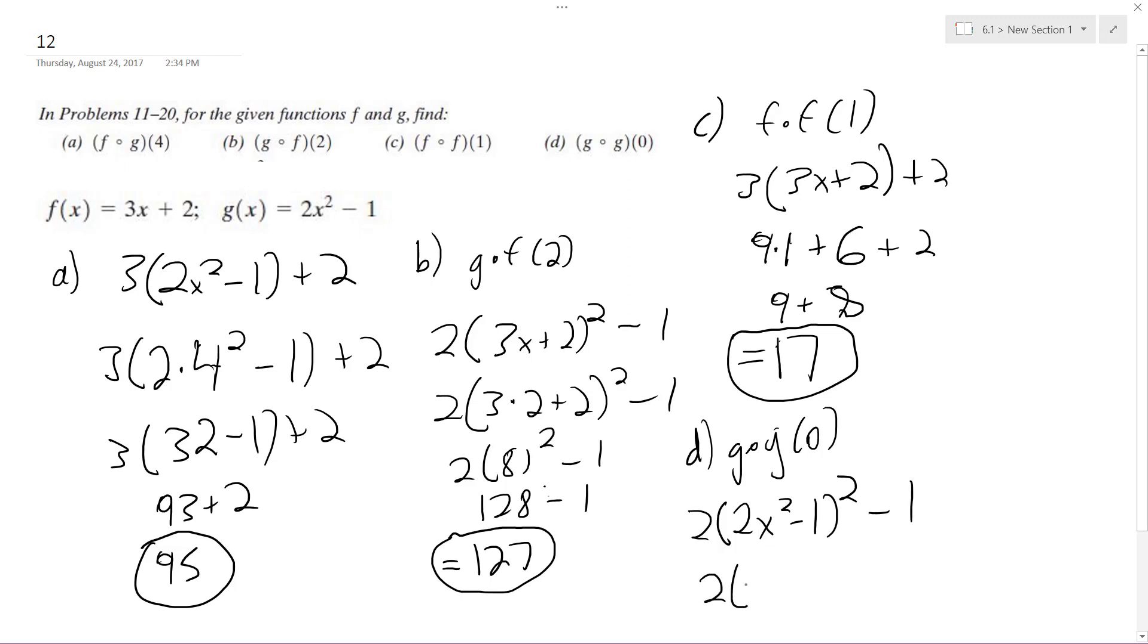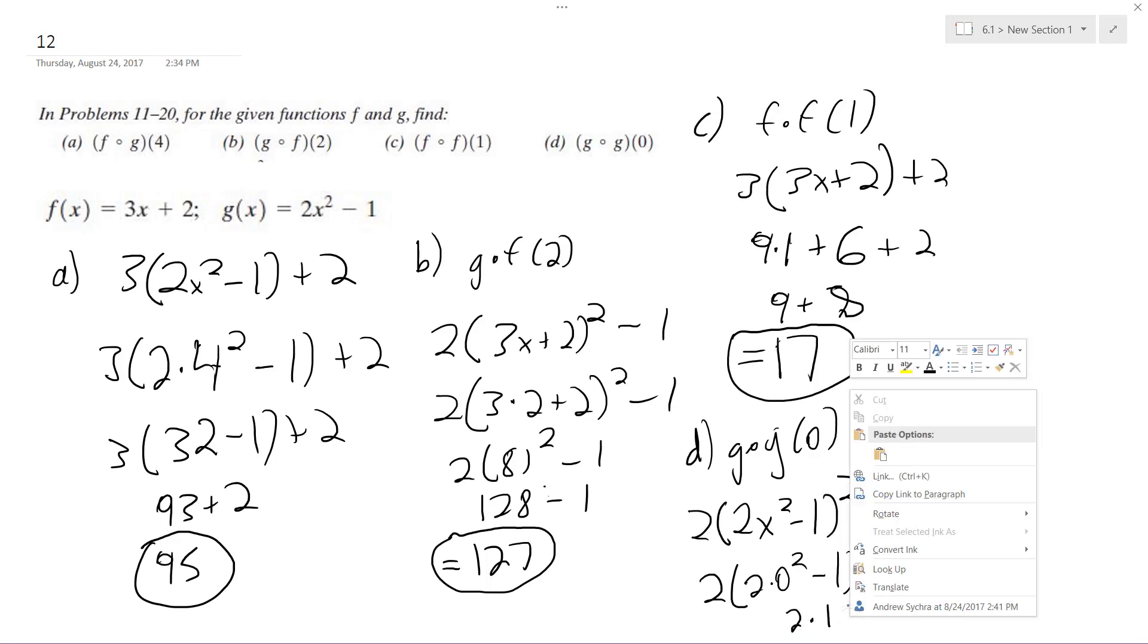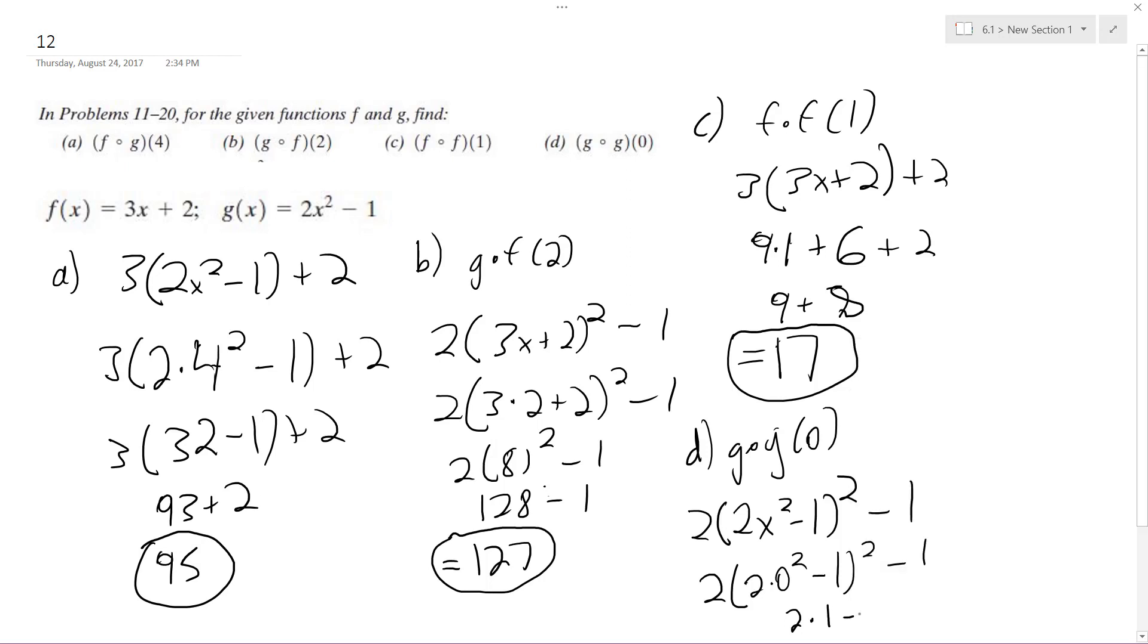So 2 times 2 times 0 squared minus 1, squared minus 1. So we get 2 times 1, minus 1, which is going to be equal to 1.